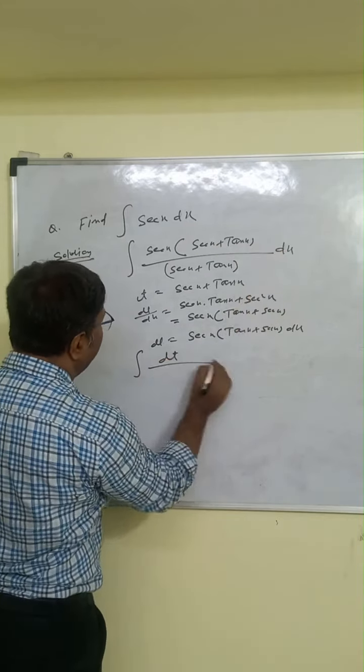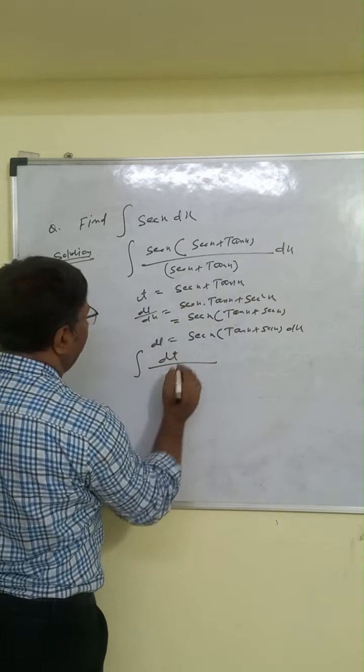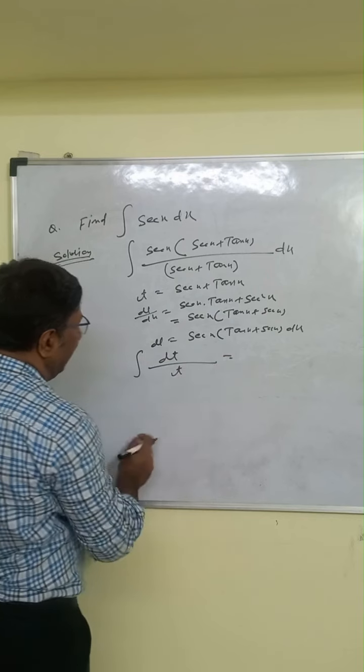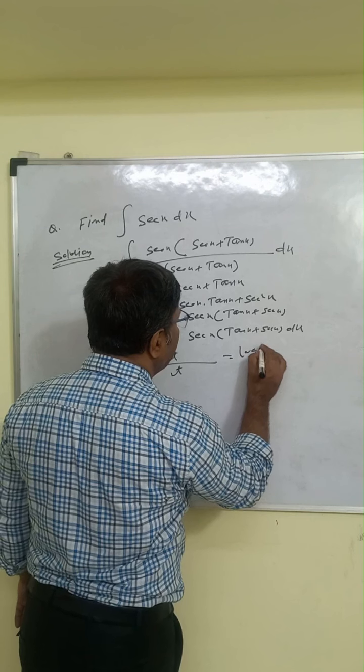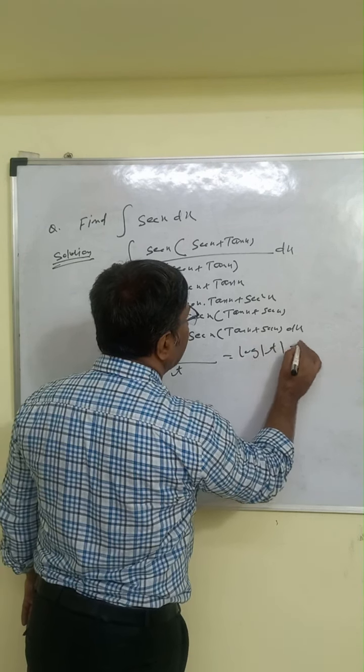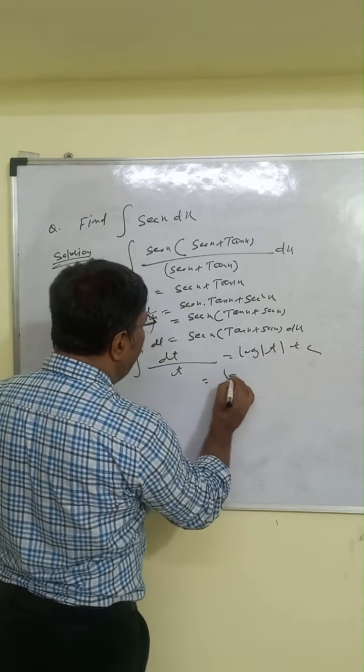So we can put direct dt here. Sec x plus tan x is t. So integration of 1 by t dx is log t. This is log t plus c.